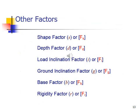Apart from the above important factors: shape factor, depth factor, load inclination factor, ground inclination factor, base factor, and rigidity factor. The other factors are also there. Totality is 6 factors which influence the ultimate bearing capacity.